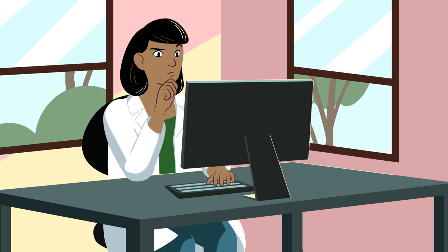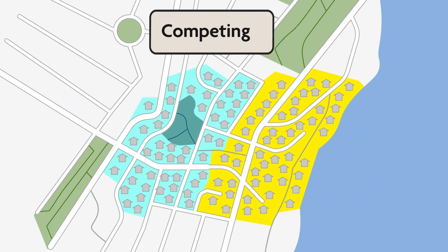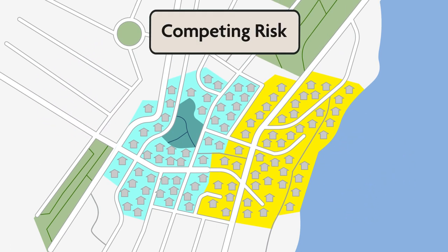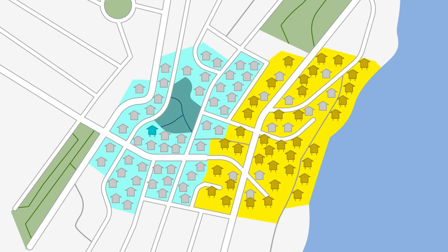Of course not. There were just some real problems with how you set up your study. One major issue: you didn't account for an important competing risk. In this case, the chance that during the study period, homeowners fortified their houses to protect against flood damage. Why would that matter? What do we mean by competing risk? Let's take a closer look.